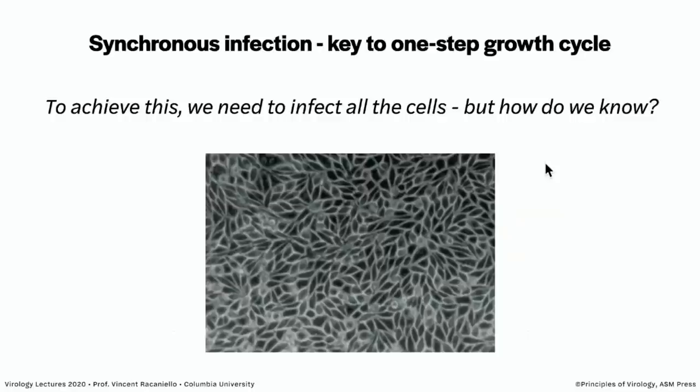How can intracellular viruses form plaques? You actually don't have to get out of a cell to form a plaque — you just need to kill the cell. Some viruses can spread without getting outside — they spread from cell to cell by fusion, and so they can make a plaque that way as well.